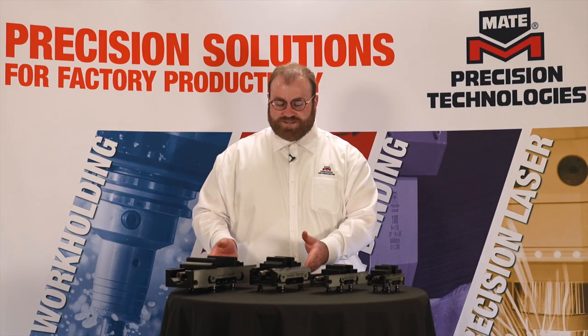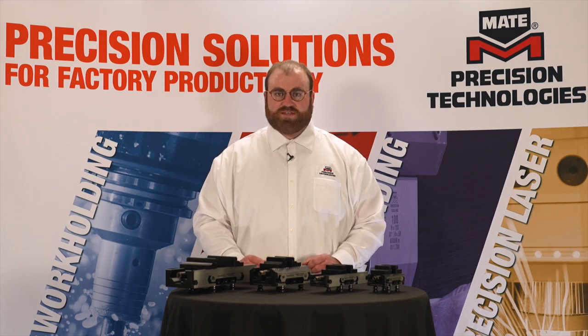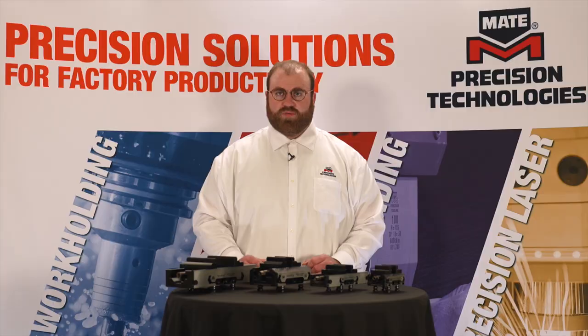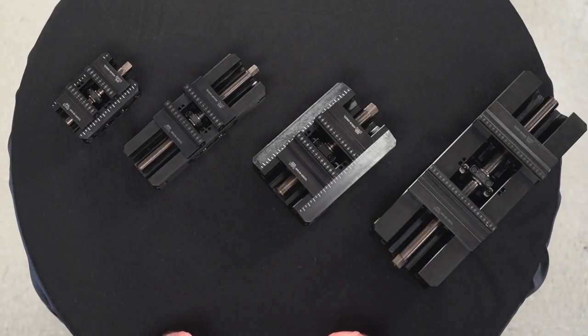Our 96 series of vices features best-in-class clamping force of 34 kilonewtons or 7,650 pounds when torqued to 130 newton meters or 95 foot-pounds.